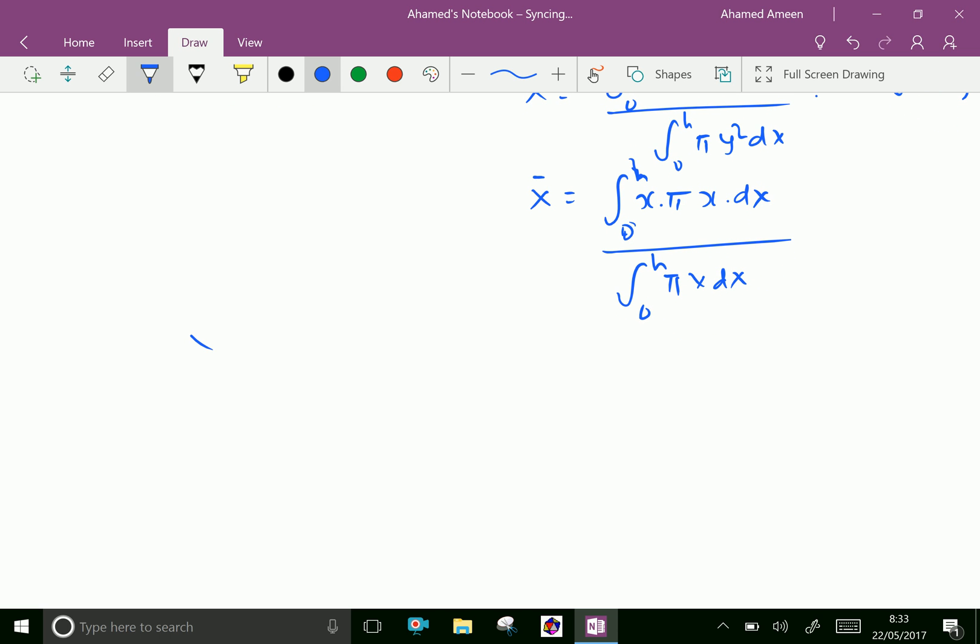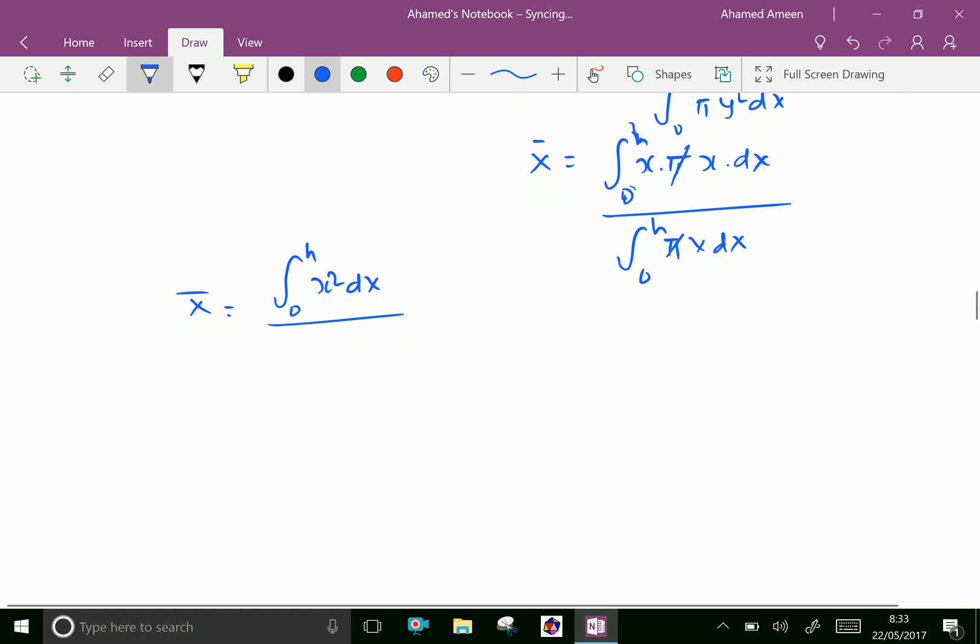Now we can write x̄ equals π times the integral from 0 to h of x²dx divided by π times the integral from 0 to h of x dx, which equals the integral of x²dx divided by the integral of x dx.